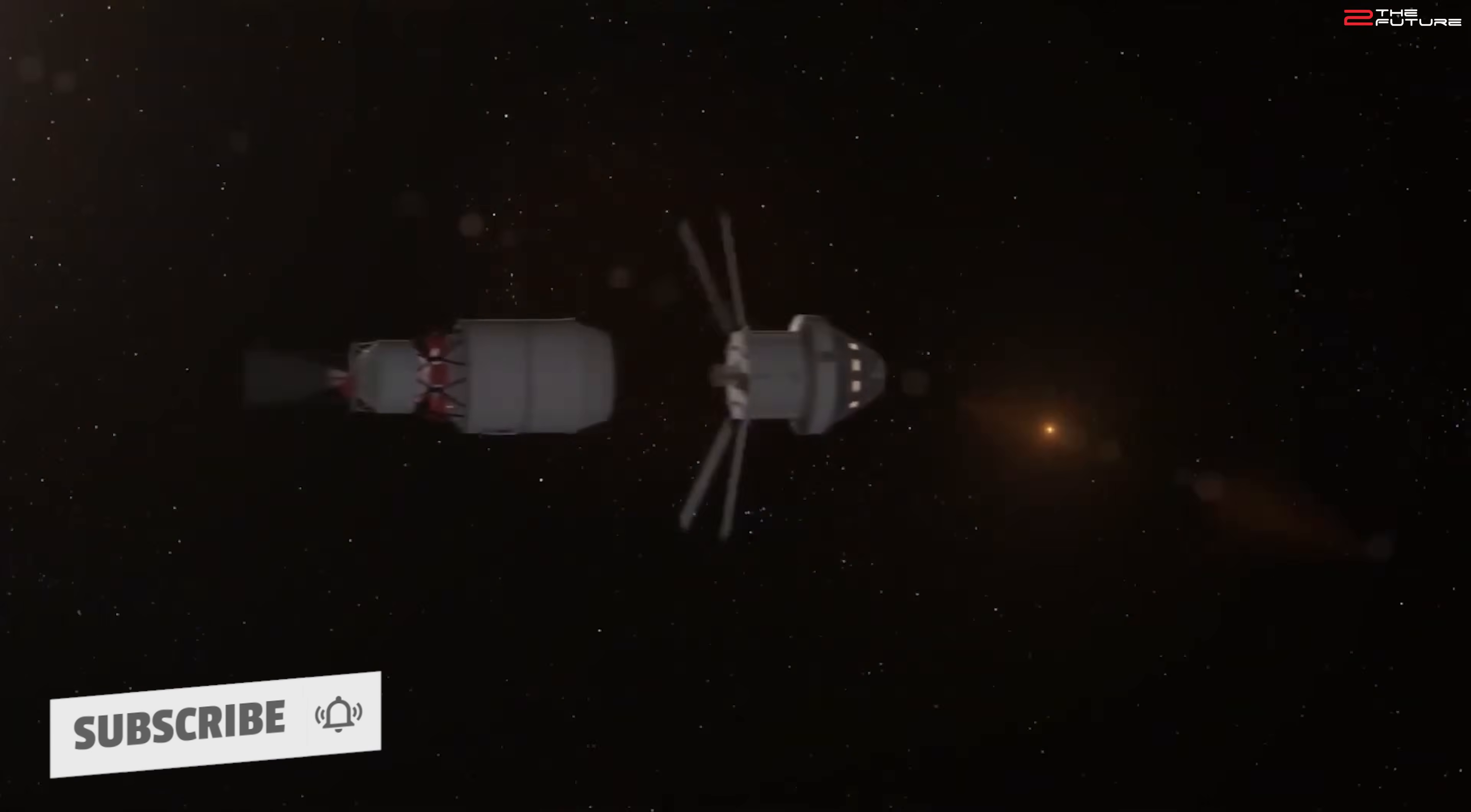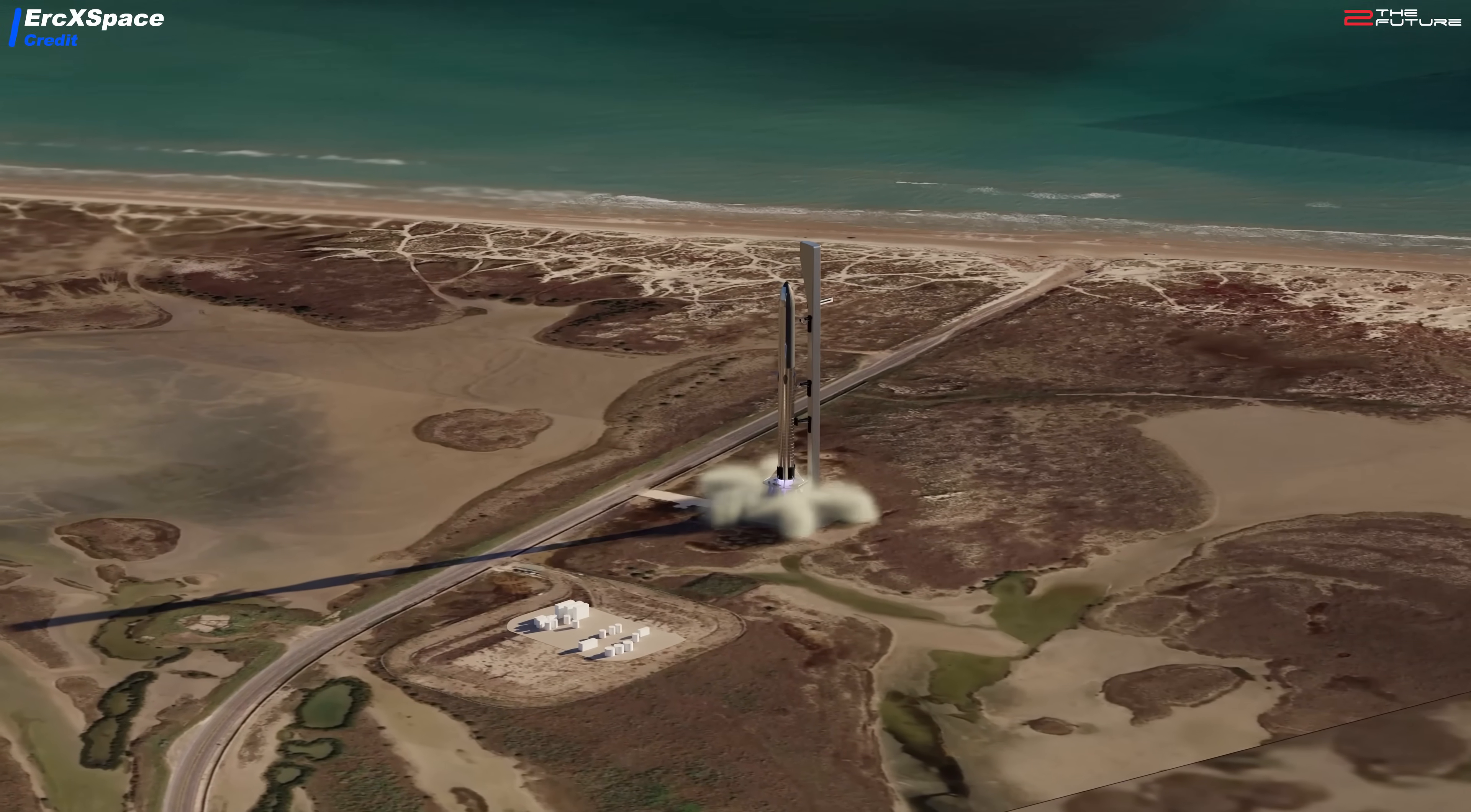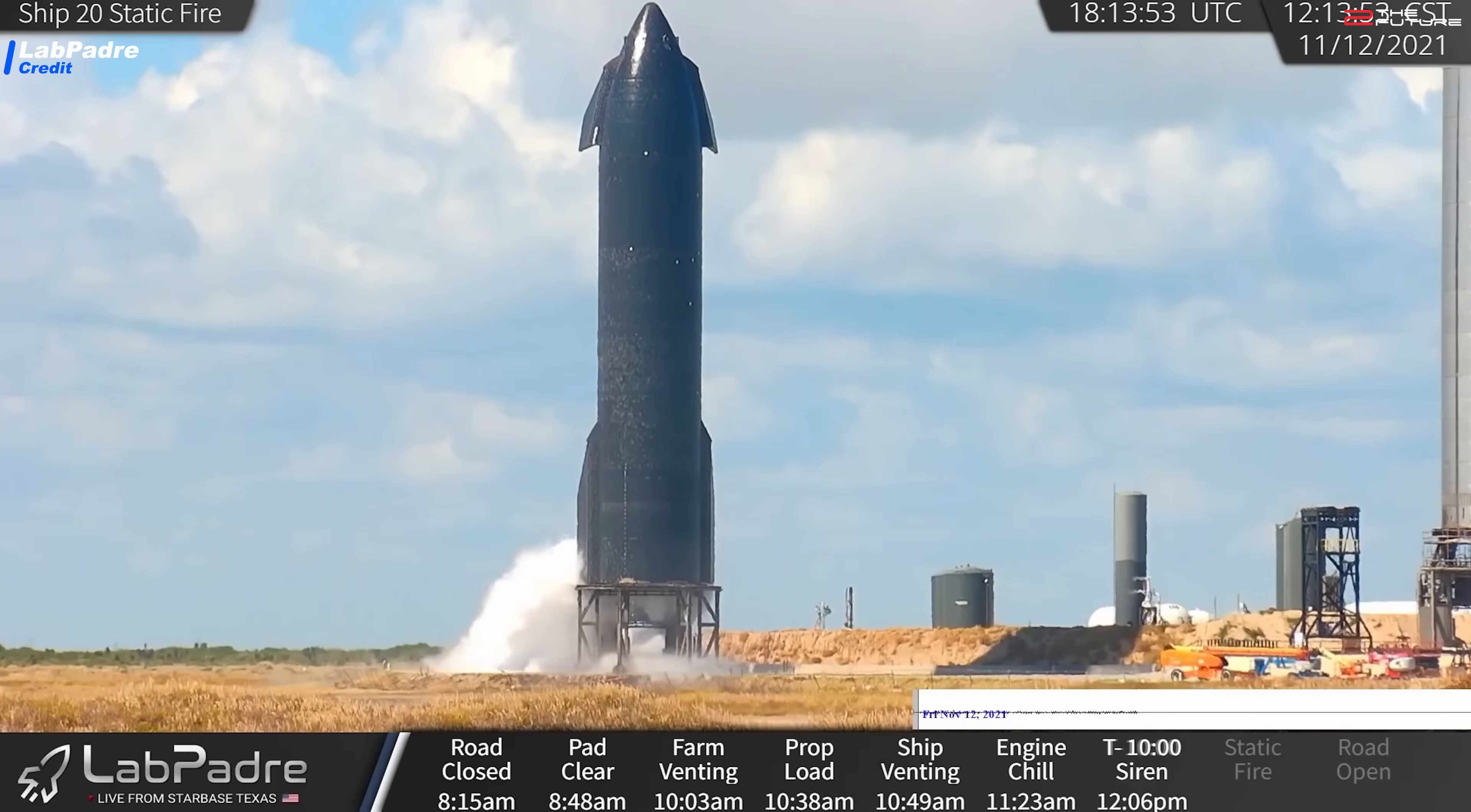Meanwhile, SpaceX is still waiting for the FAA's permission to launch the first orbital Starship and Super Heavy launch system. On this front, we at least have the news that the FAA will wrap up the whole environmental review for the SpaceX Starbase by December 31st, meaning that by this date the FAA will give its decision whether to allow SpaceX to launch Starship and Super Heavy from Boca Chica.